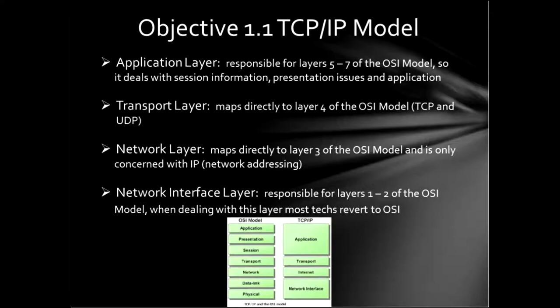When you're having a problem, most technicians go back to the OSI model because it breaks things out a little bit further and it's easier to deal with. As a network technician, I've never tried to explain something to somebody using the TCP/IP model — I always end up going back to the OSI model because it's a little bit easier for most laymen to understand, and it's easier to pinpoint issues. When you're looking for a physical issue, you look at the physical layer.